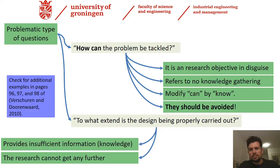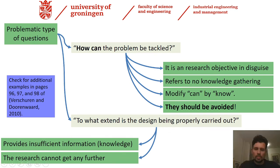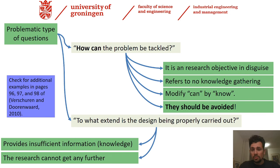This is a typical problem when preparing a research plan, when writing down questions — mostly the sub-questions: the so-called 'how can' type of questions. For instance, 'how can the problem be tackled?' This question is actually just a research objective in disguise. There is no reference to the gathering of knowledge. This type of 'how can' question should be avoided.